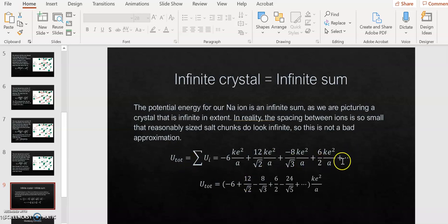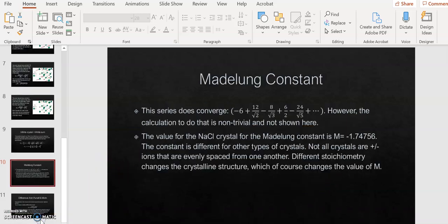If you look at what our total potential energy would be, it's this infinite sum. If I pull the KE squared over A outside of that and just look at the things that multiply the KE squared over A, then the total potential energy would be minus 6 plus 12 over root 2, minus 8 over root 3, plus 6 over 2, and then the next term, which I didn't talk about, would be minus 24 over root 5, and so on. Then that would all multiply KE squared over A. It might not seem like it, but this series does converge. However, the calculation to prove that is non-trivial, and I'm not going to show that here. It would take a lot more time than we really have. If you're interested in that, you can Google it and there's several papers that discuss this derivation for the convergence of this infinite series. I will tell you that the value for a sodium chloride crystal for the Madelung constant is minus 1.74756.